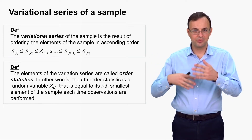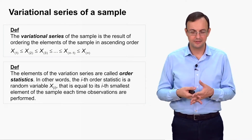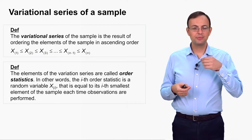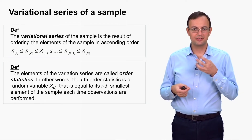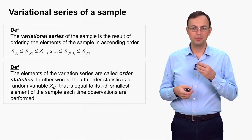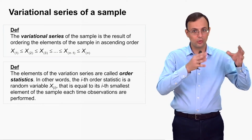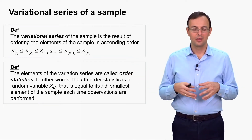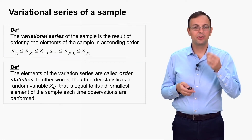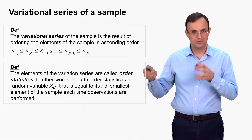The elements of the variational series are called order statistics. The i-th order statistic is the random variable equal to the i-th smallest element of the sample. For example, the 15th order statistic is the height of the person at the 15th place after the sample is sorted in ascending order — the 15th shortest person in our sample.